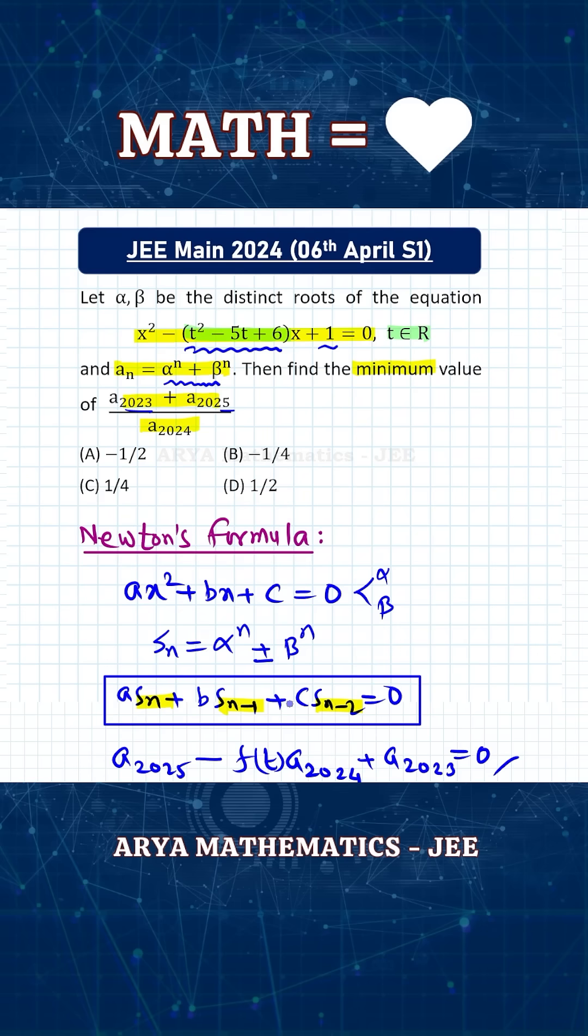this we can write as 0. And if you rearrange this expression, clearly you can see that a_2025 plus a_2023 divided by a_2024, this will be nothing but f of t. And what is f of t? t² - 5t + 6.